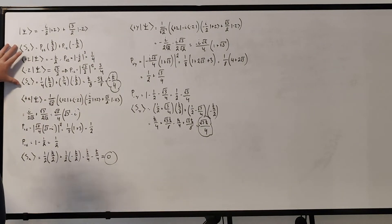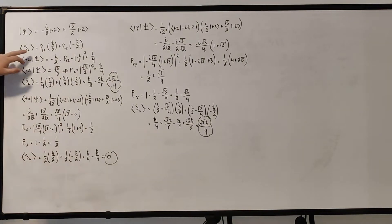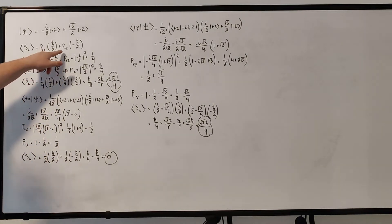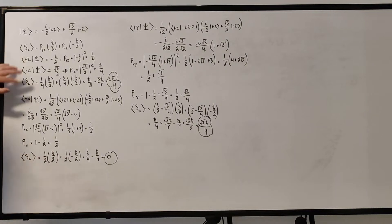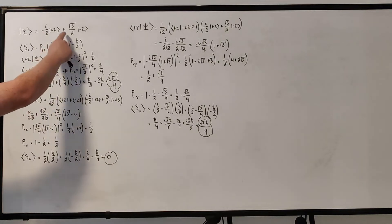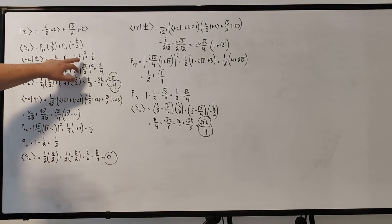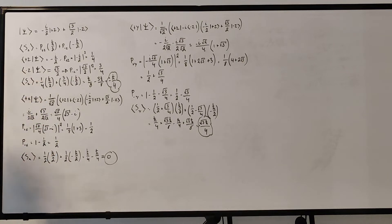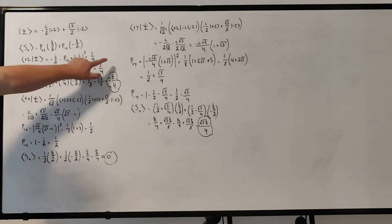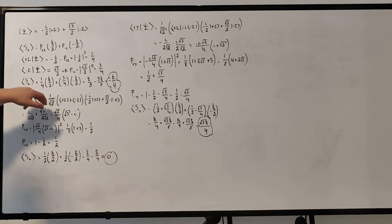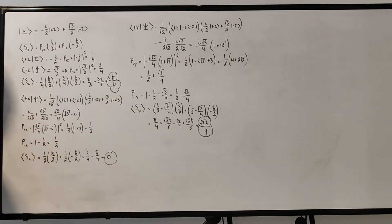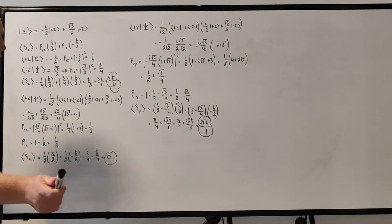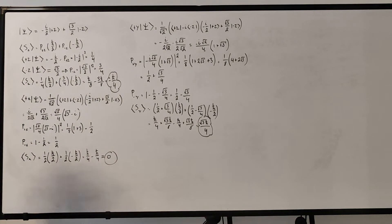Nothing has changed for the z component here. The expectation value of the z component, again, is the probability of plus z times ℏ/2 plus the probability of minus z times -ℏ/2. You get the inner product terms: the plus z component gives minus i over 2, take the magnitude squared to get the probability, so that becomes one-fourth. The minus z component gives root 3 over 2, square that to get three-fourths. Plugging those in: one-fourth times ℏ/2 plus three-fourths times -ℏ/2 gives ℏ/8 - 3ℏ/8 = -ℏ/4. That answer is the same as from problem 1.10.